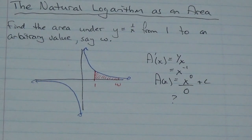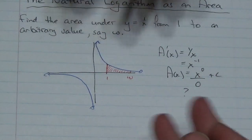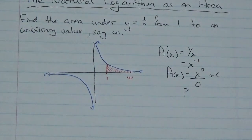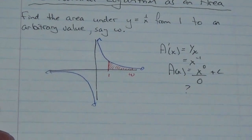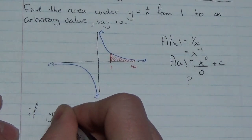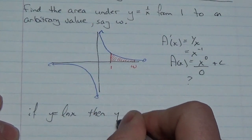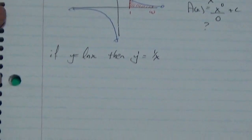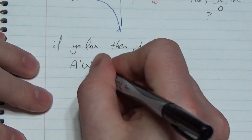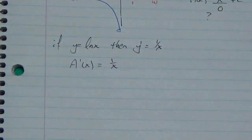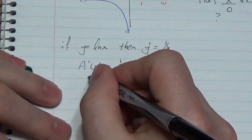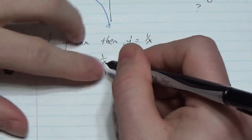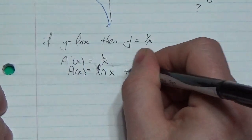This is the way a lot of antiderivatives are found — not by applying the power rule backwards, but by recognizing, wait a minute, I have seen that as the result of a derivative before. I know that if y equals the natural log of x, then y prime equals 1 over x. So when we take the antiderivative of 1 over x, we get the natural log of x plus c.